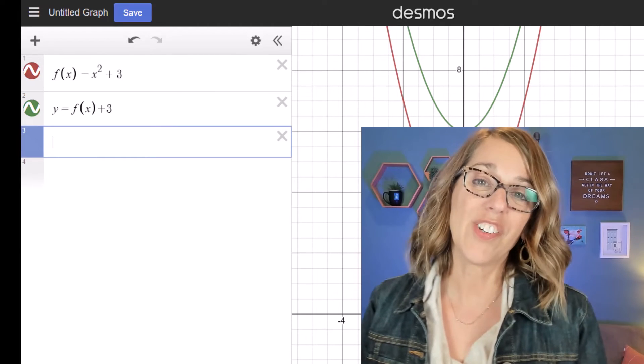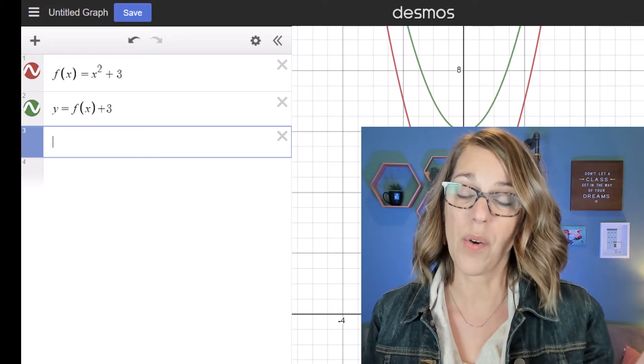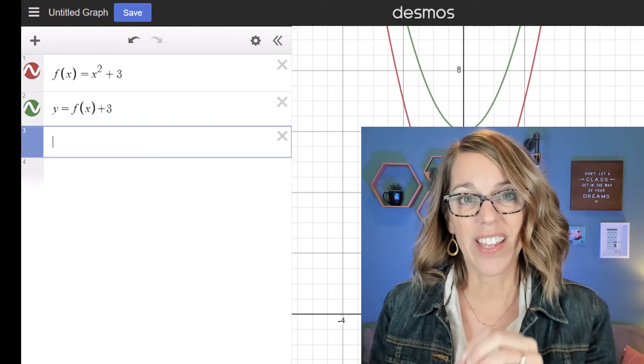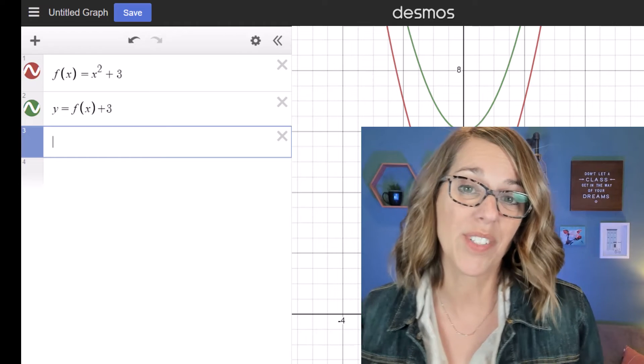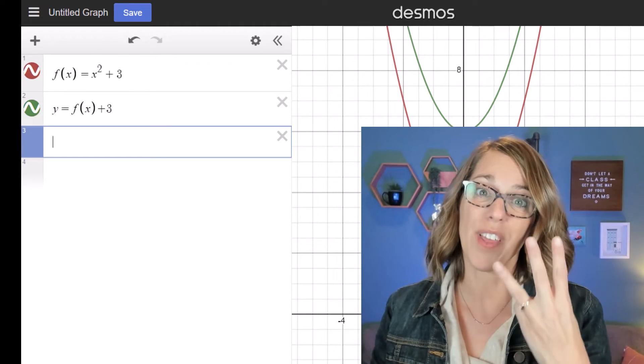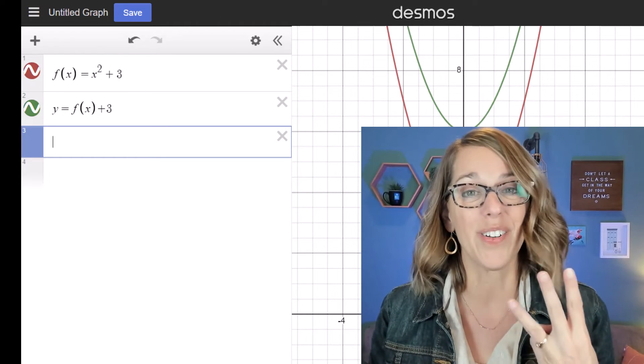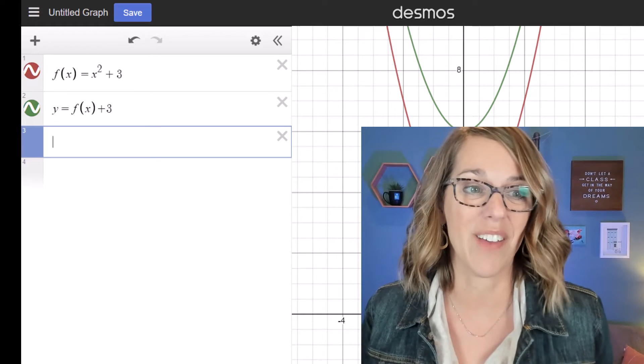Now in addition to our function as an equation and our function as a graph, I can also look at the table of values for my function. So we get all three representations of our function.